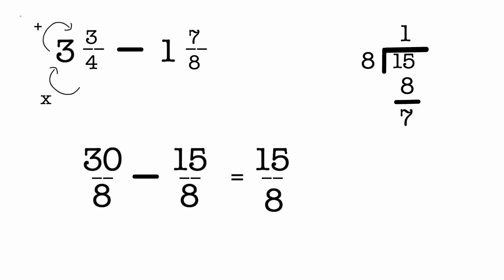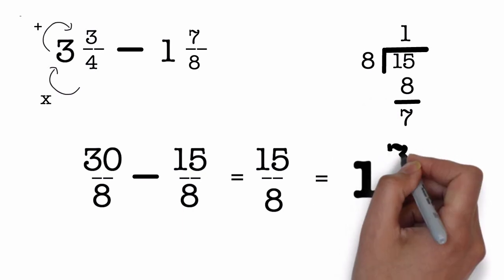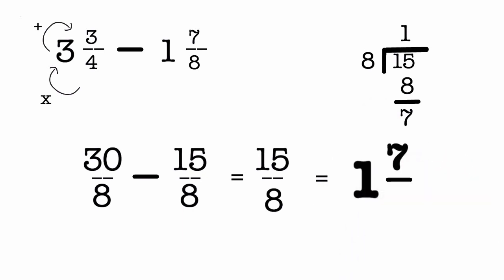Now 8 goes into 15 one time, so the whole number in our answer is 1. The remainder will go into the numerator like so. And finally the 8 will go in the denominator of our mixed number. So 15 over 8 is exactly the same as 1 7/8.